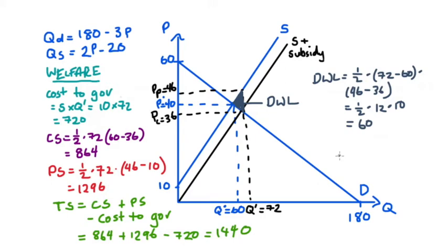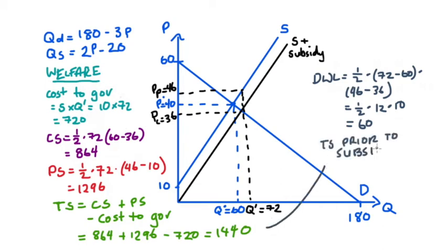There are a few ways to interpret the deadweight loss. First, due to the subsidy we're producing 72 units instead of 60. For units between 60 and 72, the marginal cost of production (measured by the supply curve) exceeds the marginal benefit of consumption (measured by the demand curve). The sum of those excess costs is the deadweight loss. Second, the DWL equals the reduction in total surplus: 1,500 − 1,440 = 60.